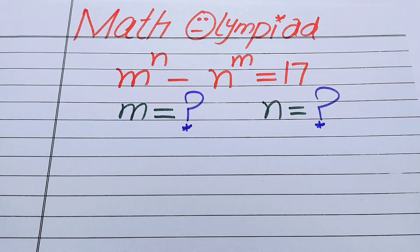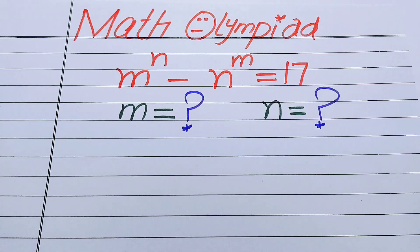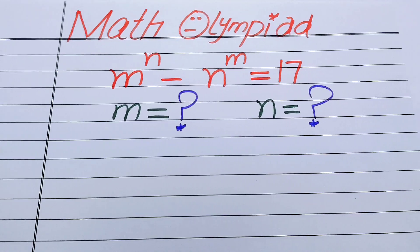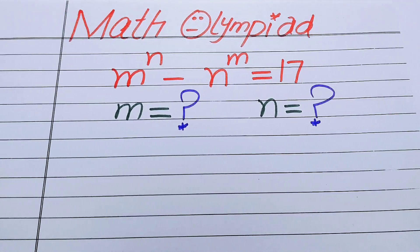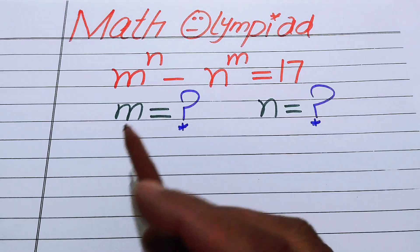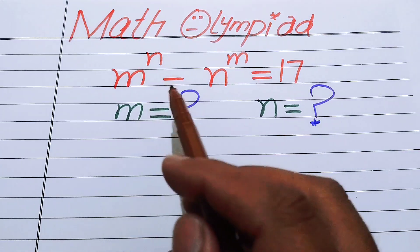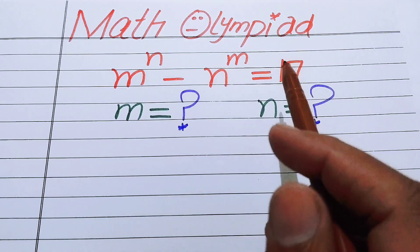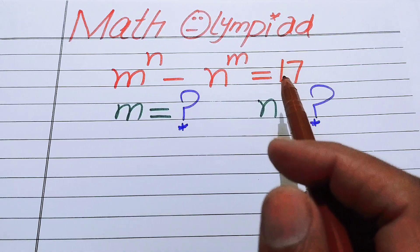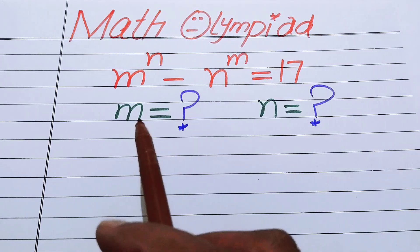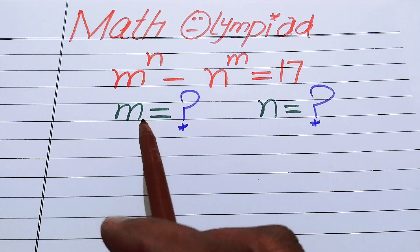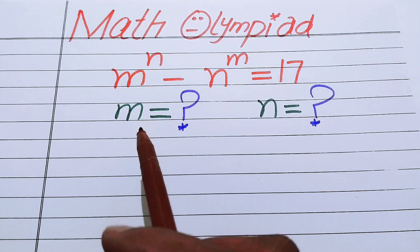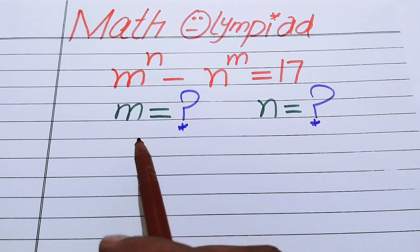Hello everyone, welcome back to the Map of Mathematics. In this video we are going to solve this nice algebra problem: m to the power of n minus n to the power of m equals 17, and we will find the values of m and n.